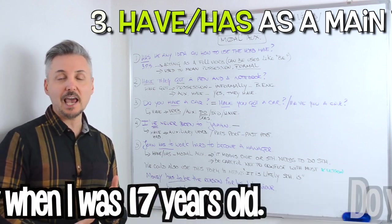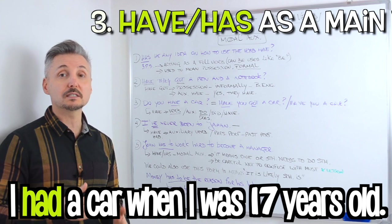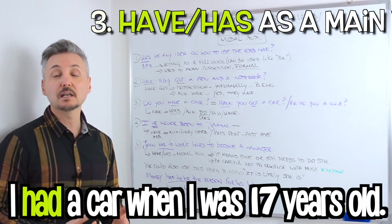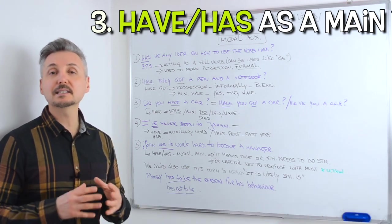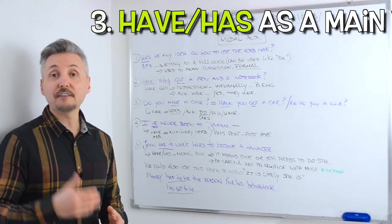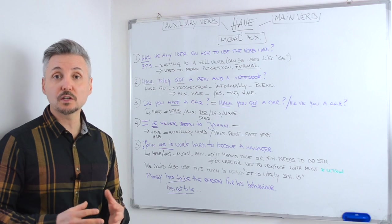But I could say, I had a car when I was 17 years old, for example, in the past. In this case, have is the main verb. Don't forget it's the same as saying have you got a car, or have you a car. But this form is the most used nowadays.